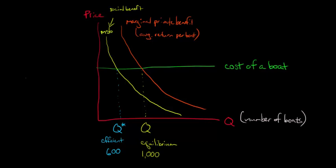This common resource, there's an incentive to overuse it because people are just trying to put more and more boats out there. In this example, there's 400 additional boats, the 1,000 minus 600. We got almost double the number of boats out there that we should have from a socially efficient perspective, and that could lead to overfishing. It could deplete the lobster supply, and we've seen this happen in the real world where fish stocks or lobsters are depleted.